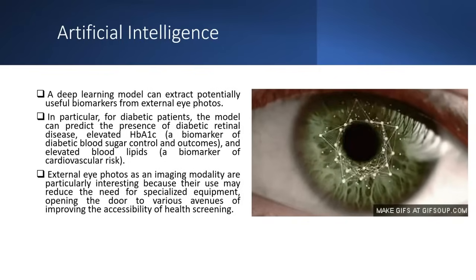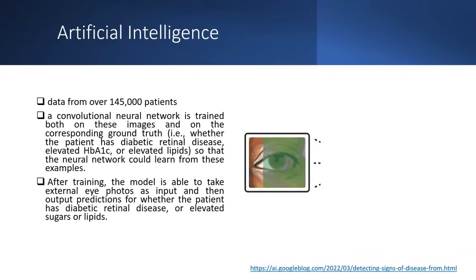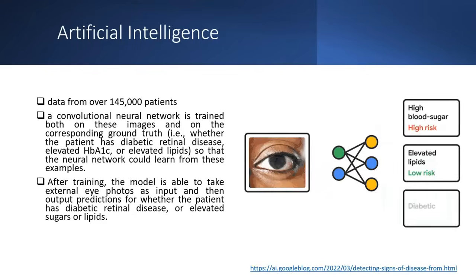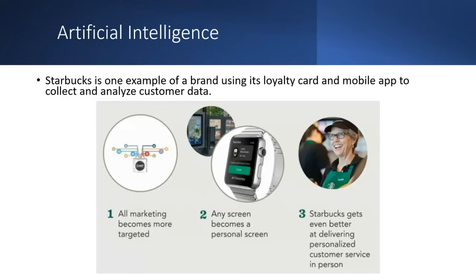For example, from an eye scan, applying a deep neural network can reveal different health risks. Facebook uses deep learning, Twitter uses IBM Watson, Snapchat uses machine learning models, Instagram uses big data analytics, and Starbucks gathers customer data for revenue generation.